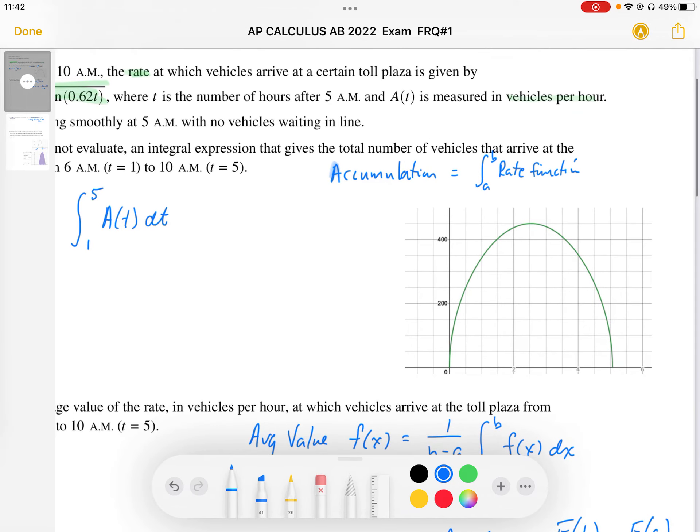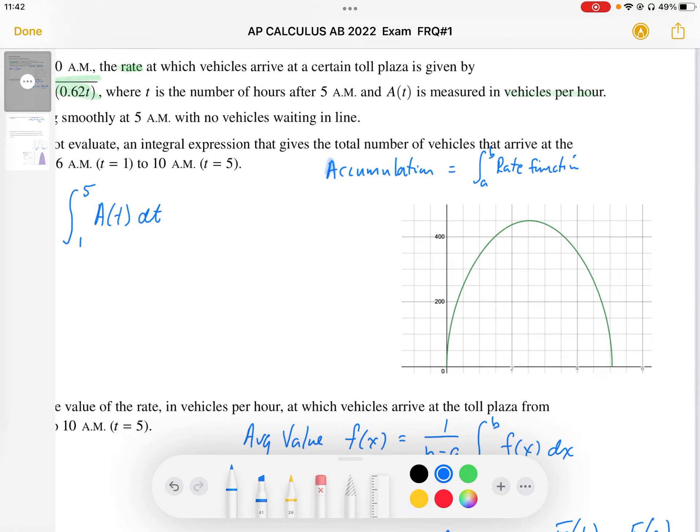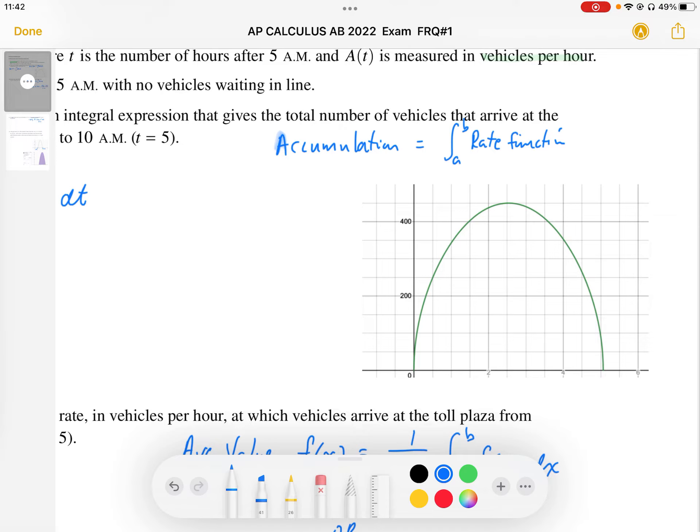If we take a look at our a(t) function, that accumulation is going to start at t equals 1 to t equals 5. So we're talking about this area in here.